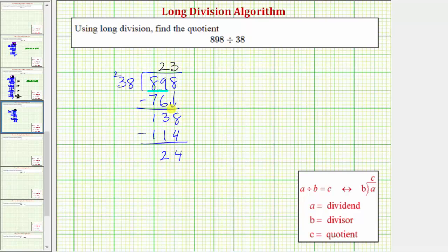Also notice how we have now used all the digits in the dividend, and therefore we're done. This last difference gives us our remainder. So 898 divided by 38 equals 23 with the remainder of 24. So because we have a remainder, that means 38 does not divide evenly into 898.